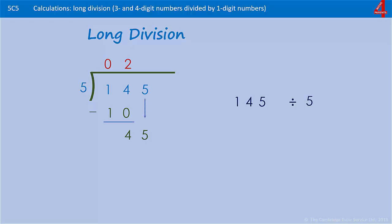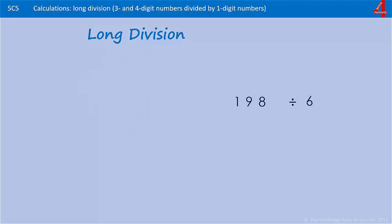We have 45 and we say how many times does five go into 45? It goes in nine times, so we put the nine at the top, and then we say what's nine times five — that's 45 — and we take that away and we're left with zero. If the number you're dividing will divide exactly, you will always end up with zero. There will be some later on with remainders.